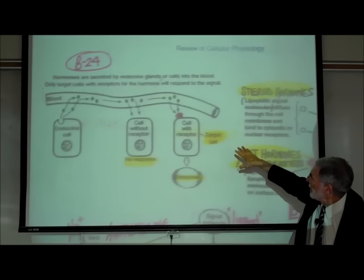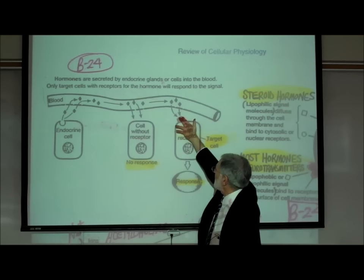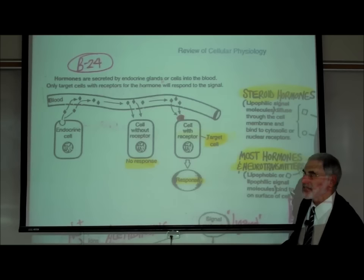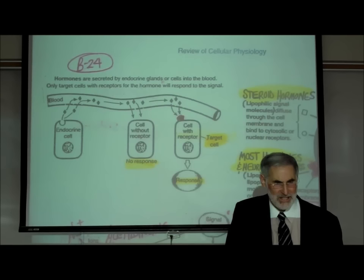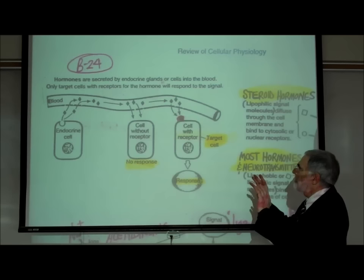There would be no response. On the other hand, this cell has an insulin receptor site. The insulin, as it diffuses out of the bloodstream, can attach and activate that receptor site, creating an effect or response. Any cell that has receptor sites for a particular hormone or neurotransmitter is referred to as a target cell for that particular hormone or neurotransmitter.